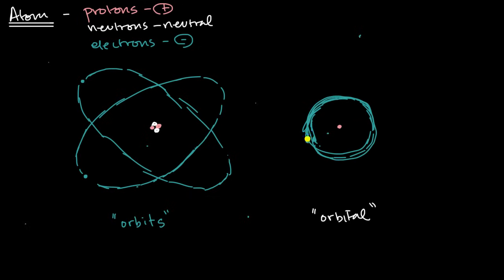But once again, it could be here, there, or anywhere — we're just saying where it happens to be 90% of the time. That's the visualization. Now an interesting question is: what if you were to give that electron a little bit more energy? What does energy mean?